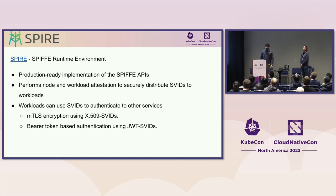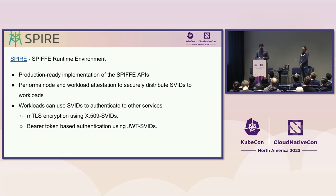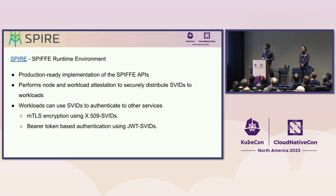Next, we'll discuss SPIRE, which is short for SPIFFE Runtime Environment, and it provides production-ready implementation of the SPIFFE APIs. Primarily, SPIRE works on two main processes around workloads: workload registration and workload attestation. Registration is a way to tell SPIRE how to identify a workload, and SPIRE uses that when it's trying to attest a workload. Attestation is a way for SPIRE to figure out details regarding who the process requesting an SVID is, and uses those details to find the corresponding registration information in order to issue an SVID. Usually, workloads use SPIRE-issued SVIDs to authenticate to other workloads — for example, mutual TLS encryption using X509 SVIDs, or bearer token-based authentication using JWT SVIDs.